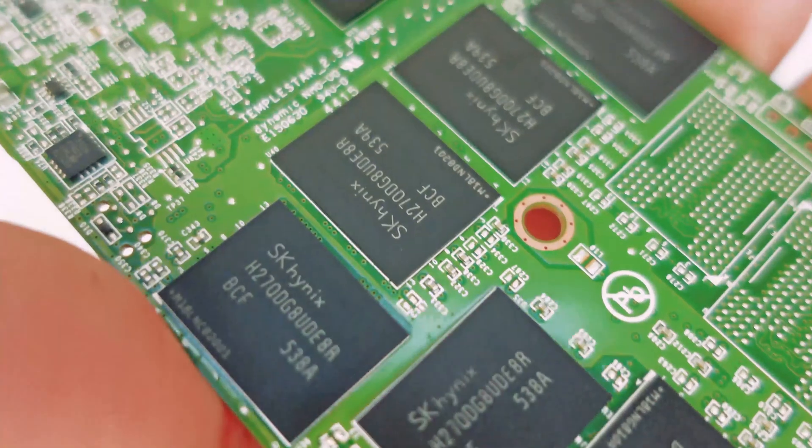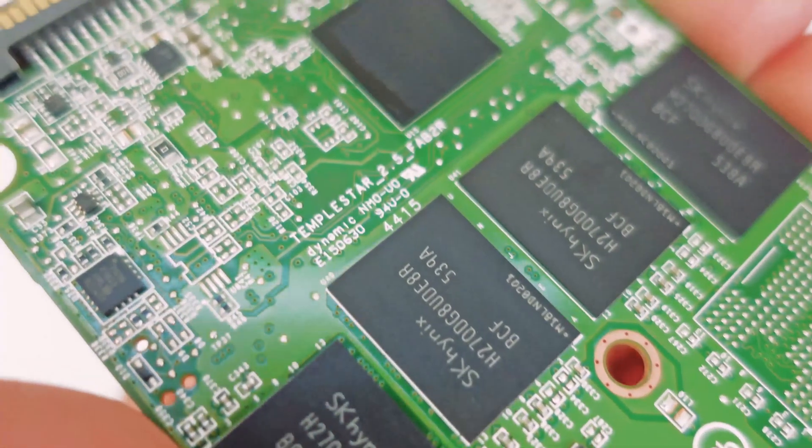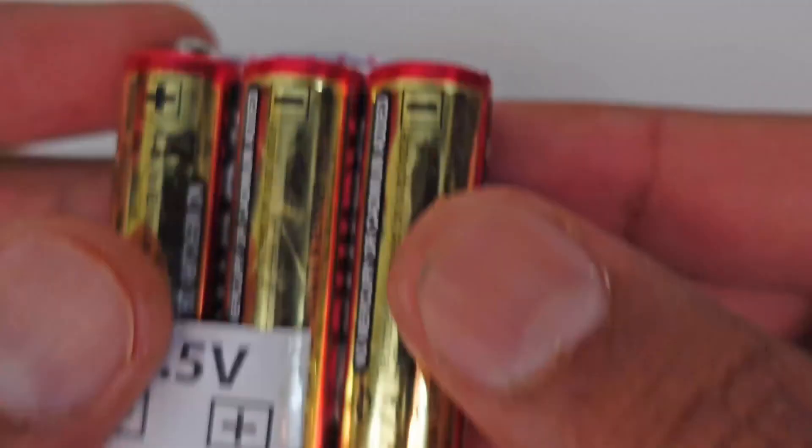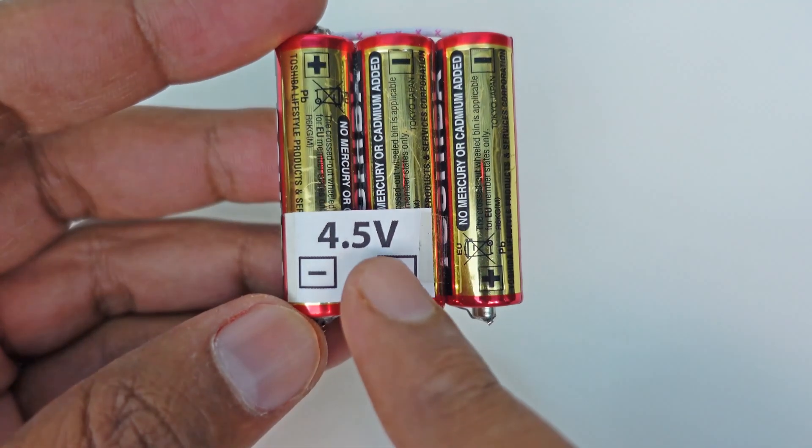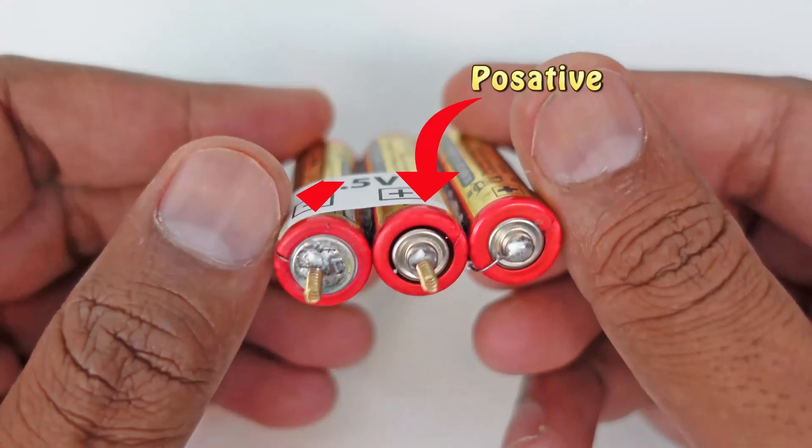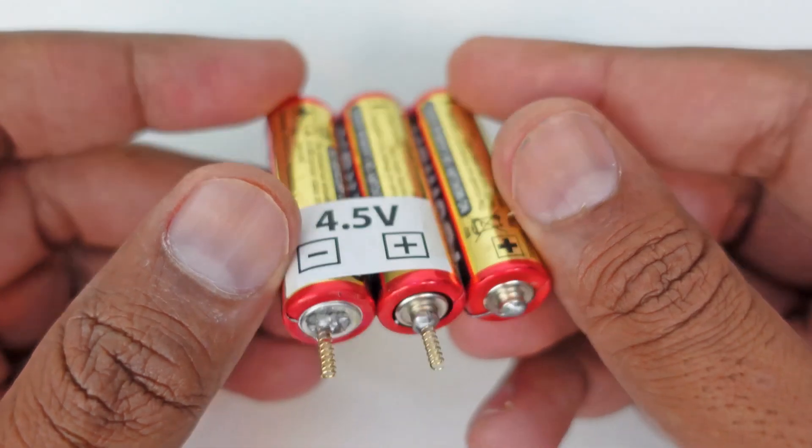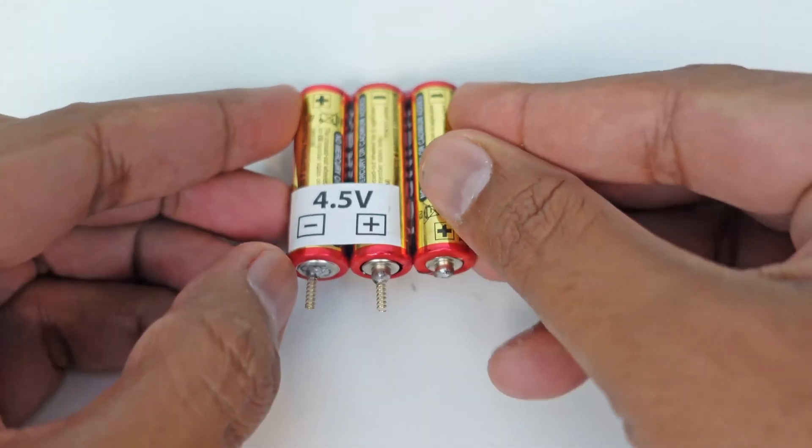Let's learn from the very basics how flash memory works, and we will also create a small flash memory. As you can see, we have three battery cells in series which have total 4.5 volts and positive and negative connections are coming out of it. We keep these battery cells in front of us.